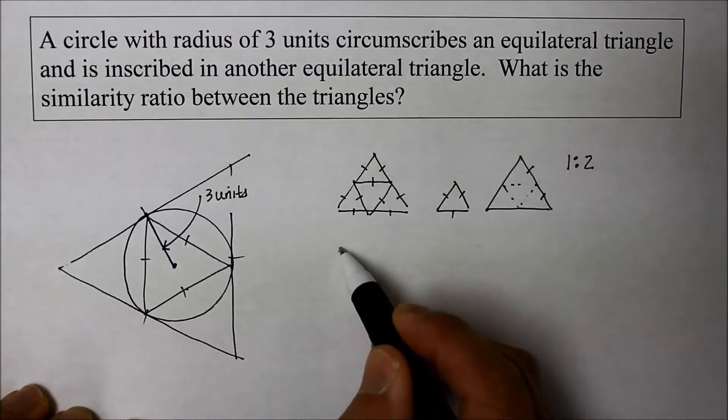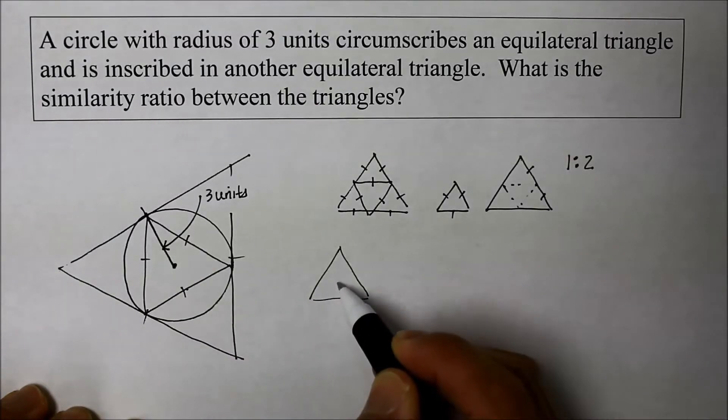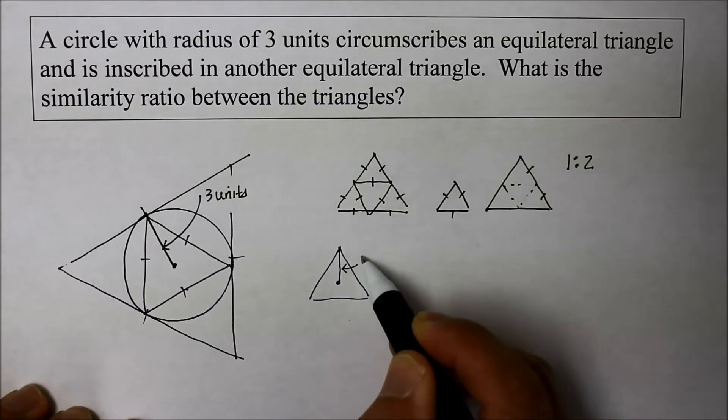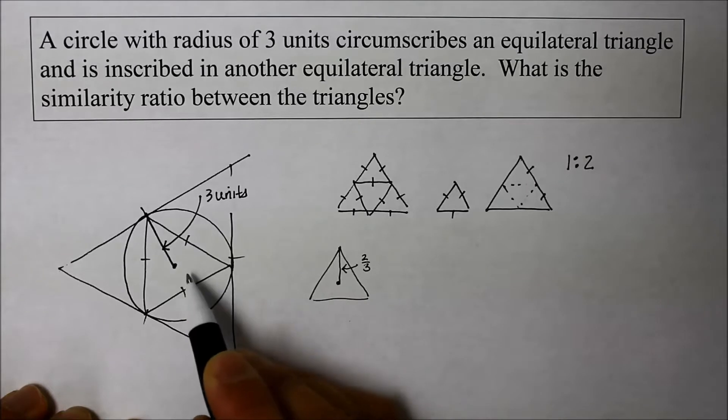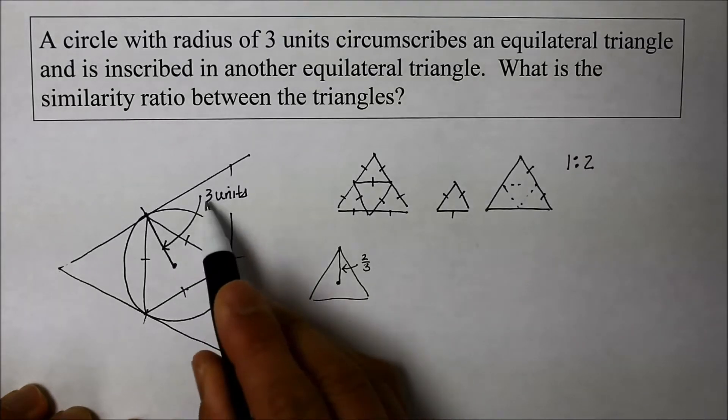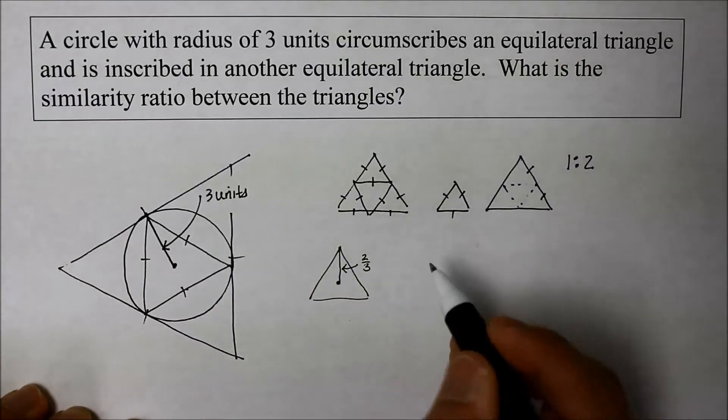So on the small triangle, from the point of concurrency of the medians to the vertex, that is two-thirds of the entire thing, which also happens to be the radius, which is three units.